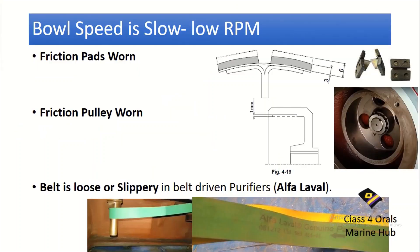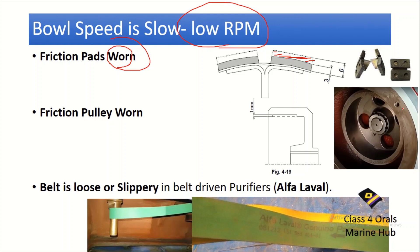Another reason for purifier overflowing is low bowl speed or low RPM. In Mitsubishi purifiers, the bowl is rotated with the help of a horizontal shaft which meshes with a gear. When the friction pads are worn, there will not be any proper clutching mechanism. If the friction pads are worn out, there will not be any proper grip and ultimately there will not be proper RPM of the bowl.